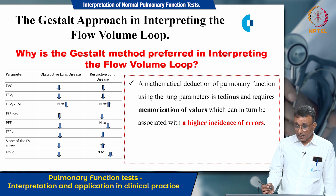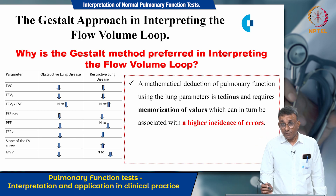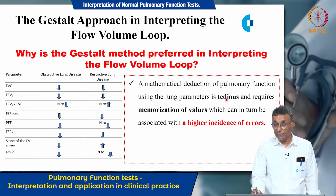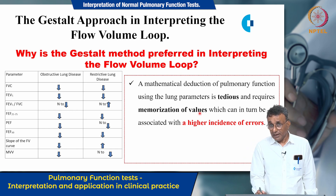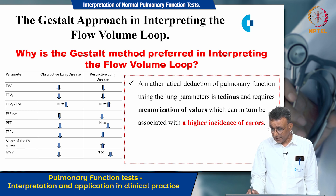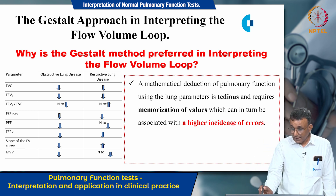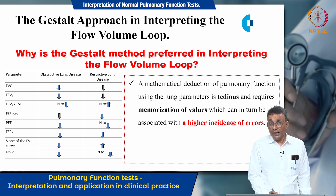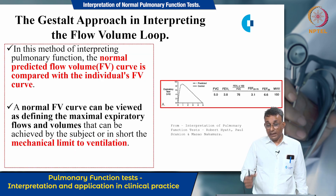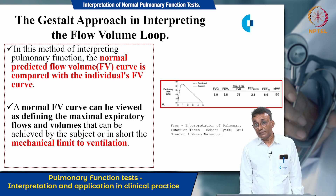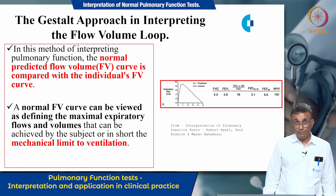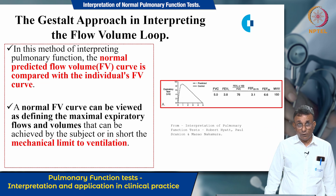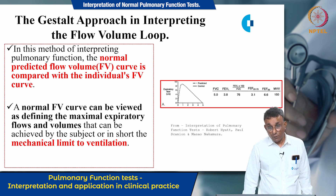Before understanding the gestalt approach, we should appreciate why we prefer it. A mathematical derivation of pulmonary function using flow-lung parameters is tedious, requires memorization of values, and is associated with a higher incidence of errors. For that reason, we do not mathematically interpret the flow volume loop as was done many years ago. In the gestalt method, the normal predicted flow volume is compared with the individual's flow volume curve.